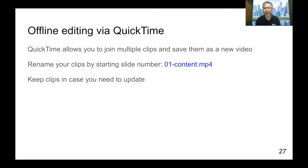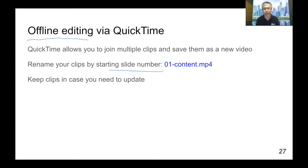If you've gotten used to shooting asynchronous video and want more control over multiple clips, it's not really viable to do that in YouTube Studio, and you'd be using YouTube mostly as a distribution network. Then you can try offline editing using QuickTime. QuickTime allows you to join multiple clips together and save them as a new video. You can rename each clip by a starting slide number so that you can reorder or reshoot parts of the video as necessary and then combine them again for a later batch or cohort.